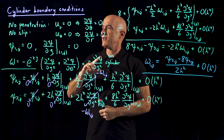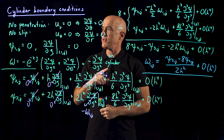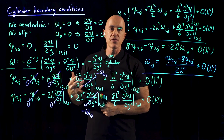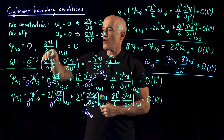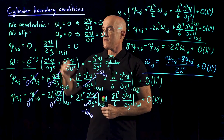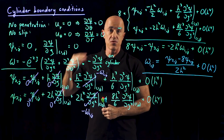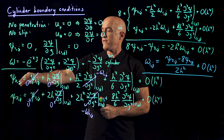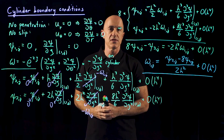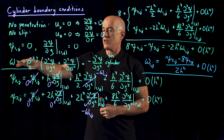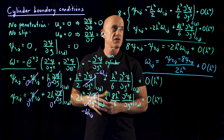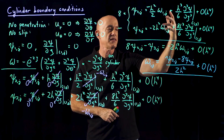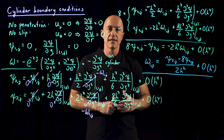To summarize: to determine the cylinder boundary condition, we use two physical principles — the no penetration condition and the no slip condition — which give us a boundary condition on the stream function and on the normal derivative of the stream function. Since we need a boundary condition on the vorticity, we perform a double Taylor series expansion one and two grid points away from the cylinder, then use the stream function equation to replace the second derivative of the stream function with the vorticity, yielding the vorticity boundary condition.